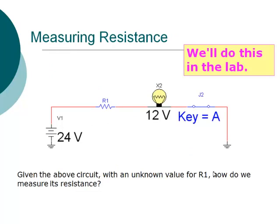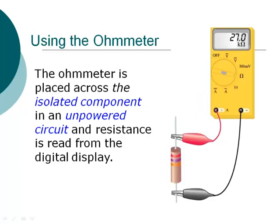Let's measure resistance — we'll do that in the lab. Given a circuit with an unknown value for R1, how do we measure its resistance? One way is using a device called an ohmmeter. In the lab, we'll use something called a multimeter, which is a multifunction meter. It will function as an ohmmeter to measure resistance, a voltmeter to measure voltage, and an ammeter to measure current.